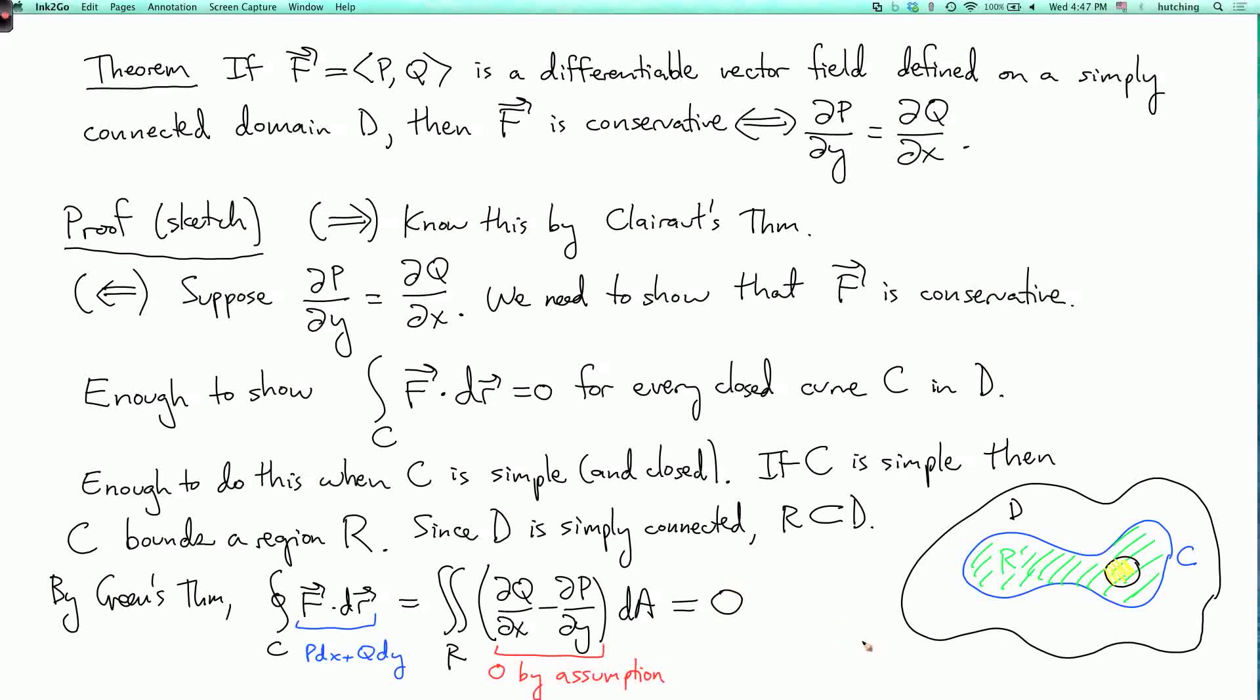So that's the proof, modulo the little points that I was sketchy about. Let's go over this again. You want to show that f is conservative if and only if ∂p/∂y equals ∂q/∂x.